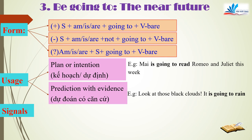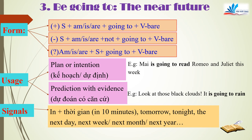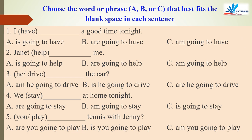Signal words for the near future: in 10 minutes, tomorrow, tonight, the next day, next week, next month, next year. I have one exercise for you to practice be going to. Choose A, B, or C that best fits the blank space in each sentence. You have 30 seconds.